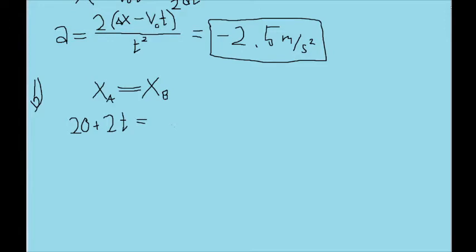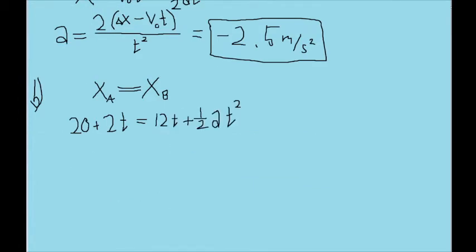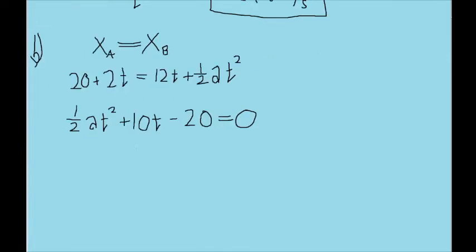Now for x_B, we already have this formula up here. This is going to be V_0 t plus 1 half a t squared. Now what we want is to find the number of values for t that make this equation true. Now you might notice from the t squared here that this is something that's going to have to turn into some form of quadratic formula. So I'll rewrite this in quadratic form by setting it equal to 0 by subtracting 20 plus 2t from both sides. And this is what you end up with.